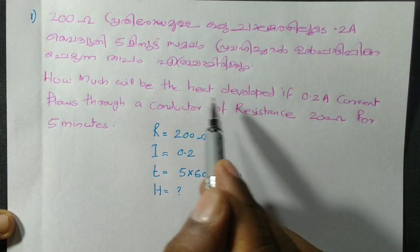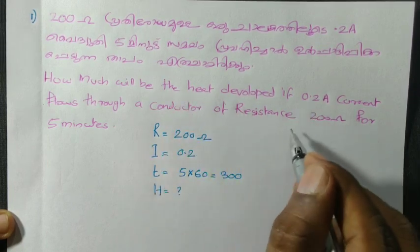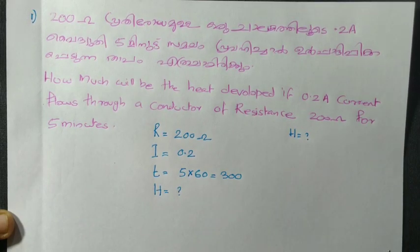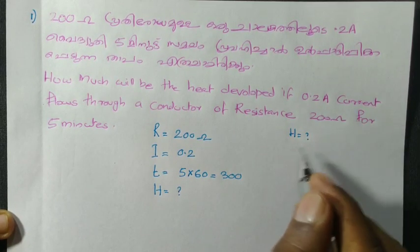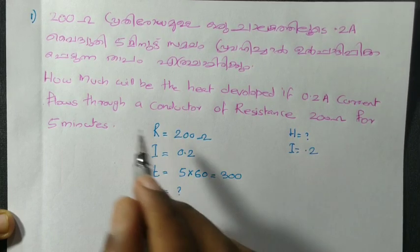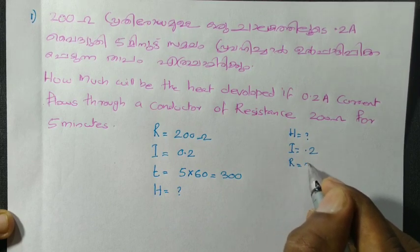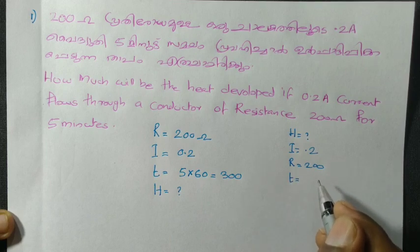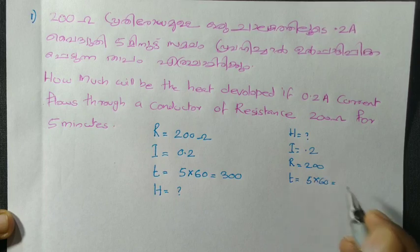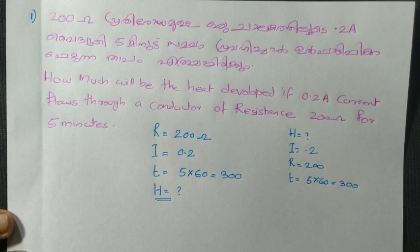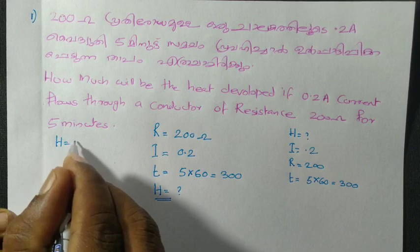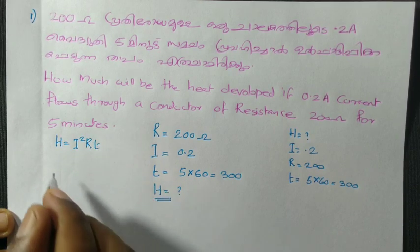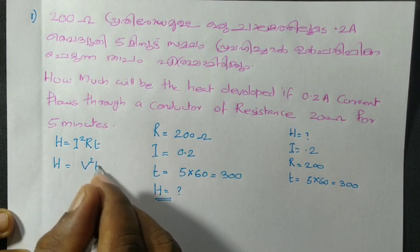How much will be the heat developed? If 0.2 Ampere current flows — T is equal to 5 into 60. This is how much will be the equation — H = I²Rt.